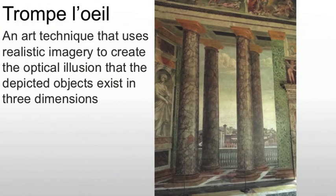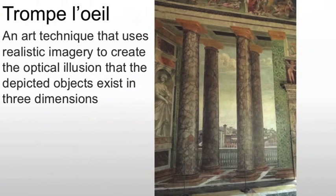They also use trompe l'oeil quite a bit. Trompe l'oeil is French for 'fool the eye' — you're creating realistic imagery to produce an optical illusion. What the Italians are doing at this time is trying to create the illusion that walls don't exist, that the space is big and open.